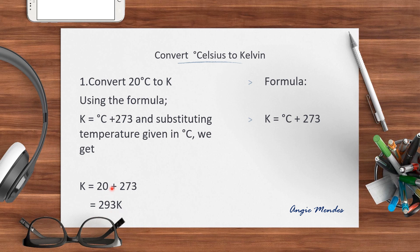Now from where did we get this 20? This is given here in degrees Celsius. So since we are converting it, we are substituting the value of degrees Celsius given and adding it to 273 to get the temperature in Kelvin.